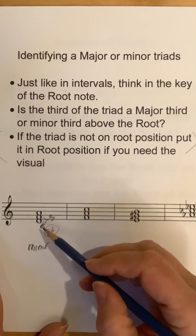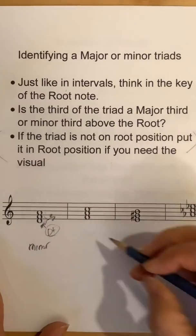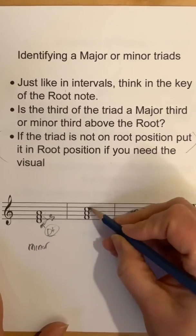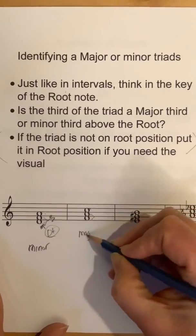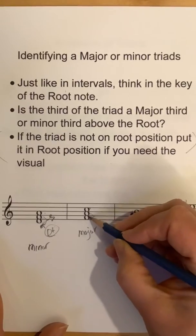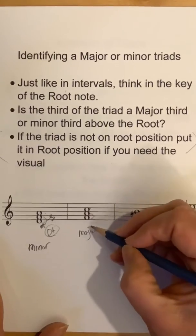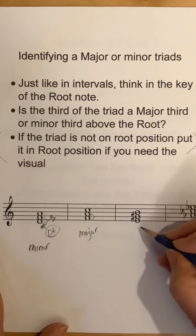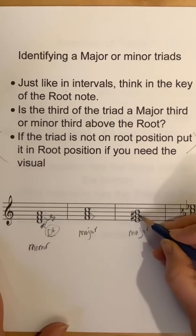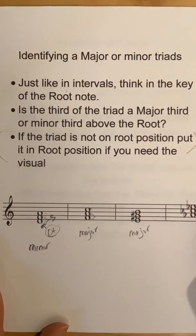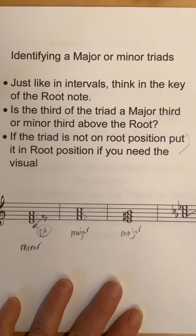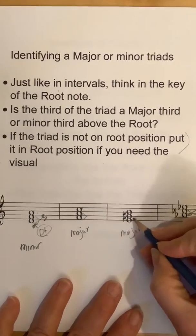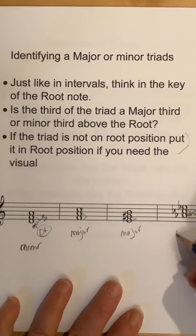If it were major, there would be an F sharp. Next: F, A, C — no key signatures here, just dealing with these triads as they come. F major: is A natural in F major? It is, so this is a major triad because F, A, C are all part of F major. We're thinking in the key of the bottom note. If it were minor, you'd need an A flat. Next: E, G sharp, B — that's major because E major has a G sharp. If it were minor, it would be G natural. Last: A flat, C flat, E flat. A flat major has four flats — there is no C flat in A flat major. This makes that a minor third, so this is a minor triad.